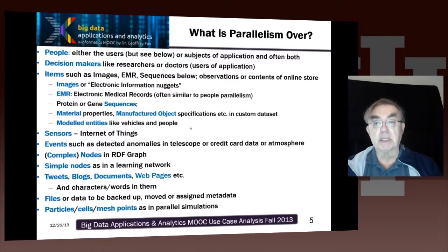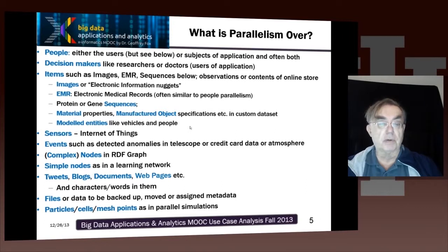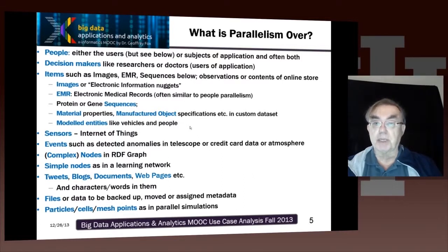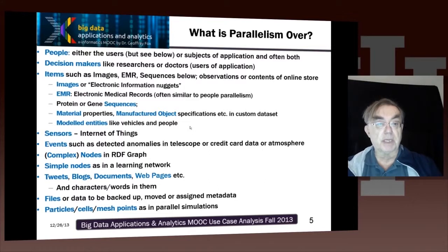One of the things we classify in those 51 cases is what's big — which is essentially, what is the parallelism over? Big data runs on big clouds, which have lots of nodes and cores, and processes and threads running simultaneously. That's parallel computing. The way you do parallel computing is to find some big number which measures the size of something, chop the things that are big up into parts, and run one part on each thread or process — the so-called single program multiple data model.